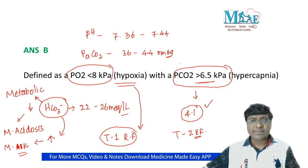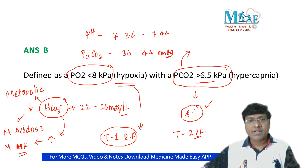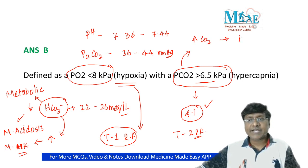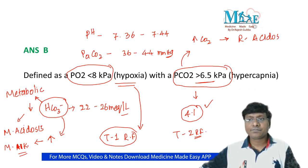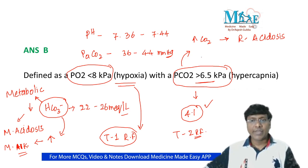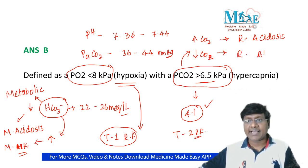The partial pressure of carbon dioxide decides the respiratory parameters. If CO2 levels are elevated, that results in respiratory acidosis — because CO2 combines with water to form carbonic acid, causing acidosis. If CO2 levels are reduced, that results in respiratory alkalosis.